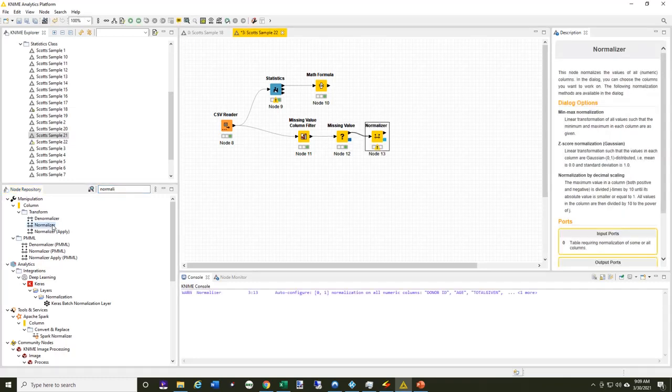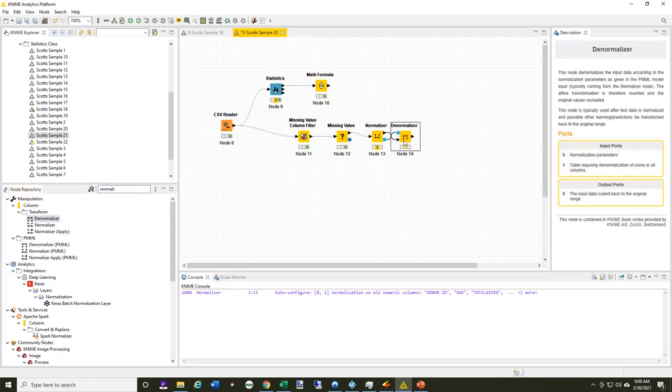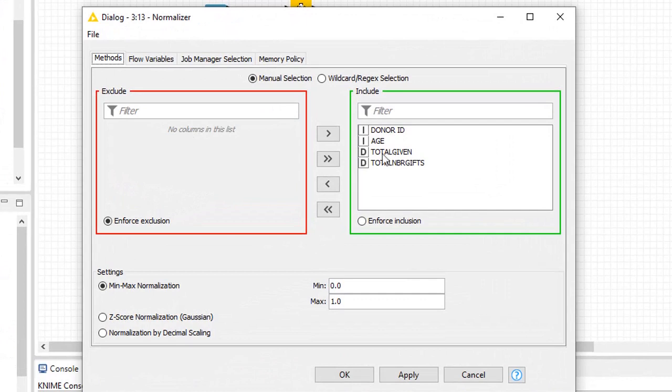I'm also going to connect up to the denormalizer. The blue port here is the normalizing model and the diamond is the data. In my normalizer node, it's showing me all of this data and I can choose the minmax function that I described, or z-score, or normalization by decimal scaling. I'm just going to go with minmax values of 0 to 1.